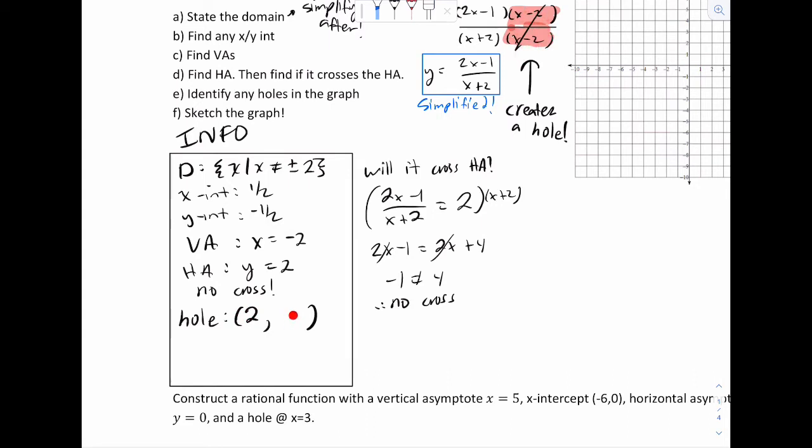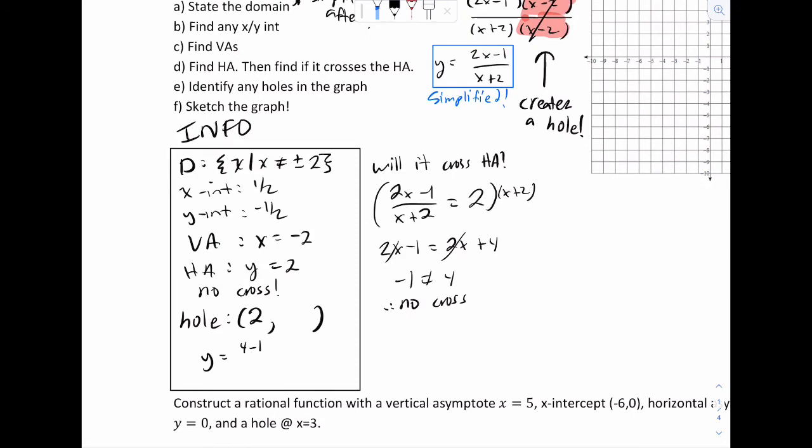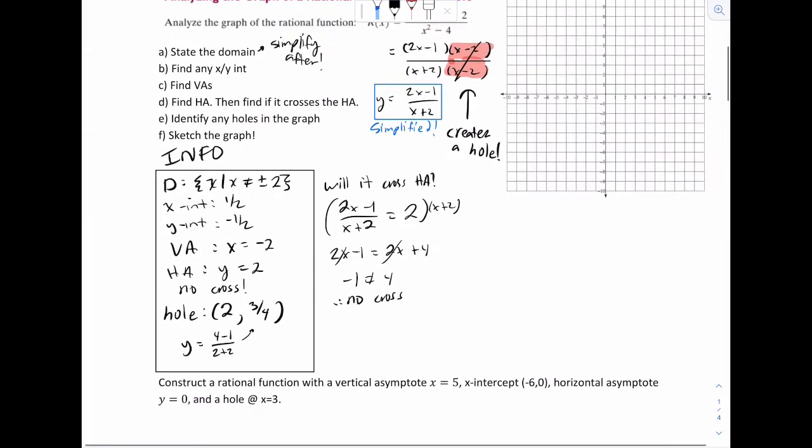Now to figure out the y portion, all you do is you plug in 2 to your simplified function right there. So I'll write it out, y equals plug in 2, that's going to be 4 minus 1 over 2 plus 2. And that's going to be 3 over 4. So that's the location of the hole. And I'll show you exactly what that looks like on the graph.